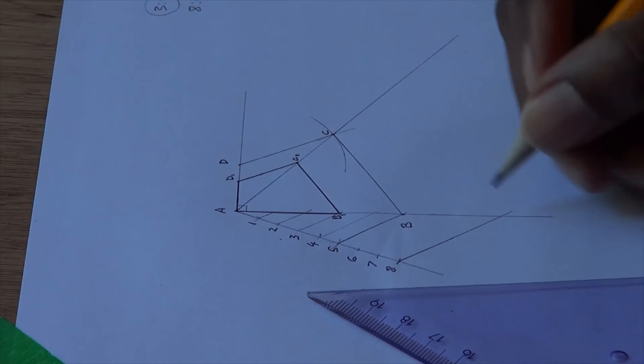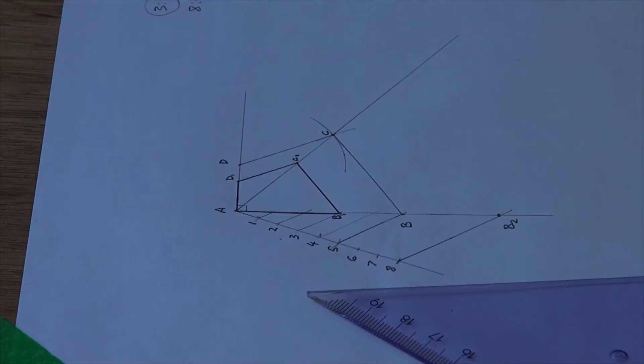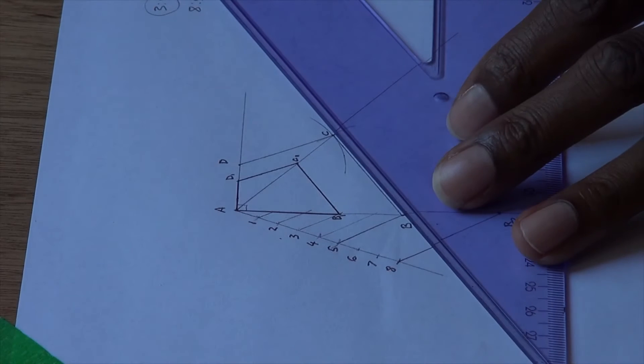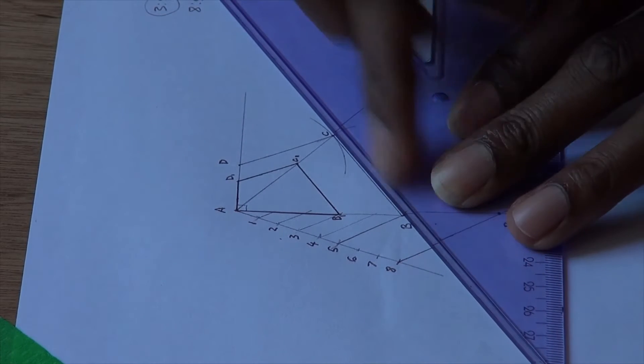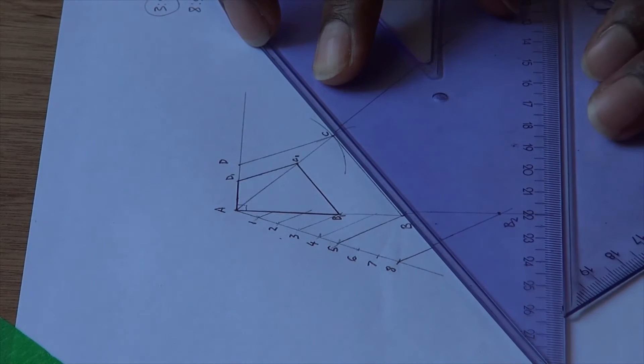This point here becomes B2. Now we are going to do the other side BC, a line that is parallel to BC. So place the set square against BC, first set square, then the second set square is placed below.